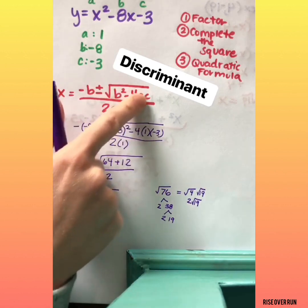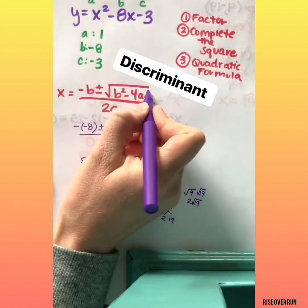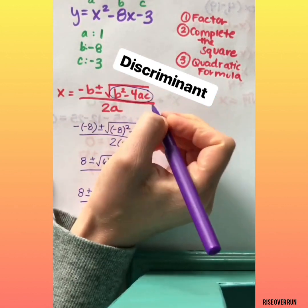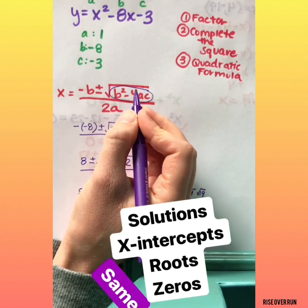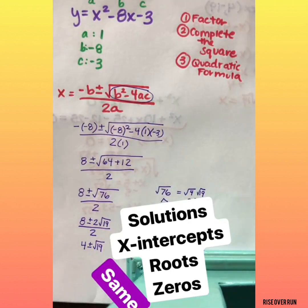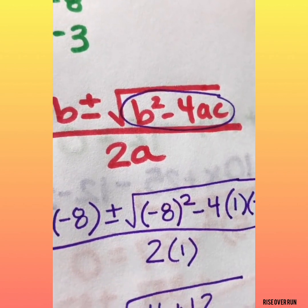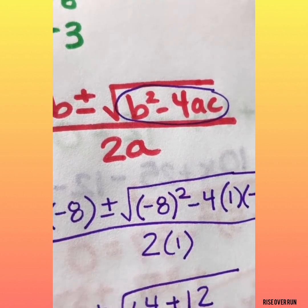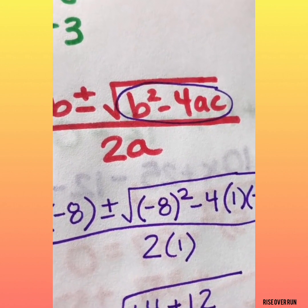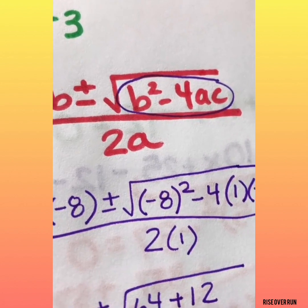A couple things to point out with the quadratic formula. This number under here is called your discriminant, and it'll let you know how many solutions or how many x-intercepts or how many roots you have. If your discriminant is positive, you have two solutions, if it's negative, you have no solution since you can't take a square root of a negative, and if it's zero, you'll have one solution.